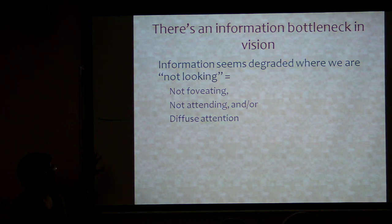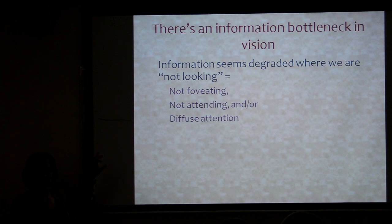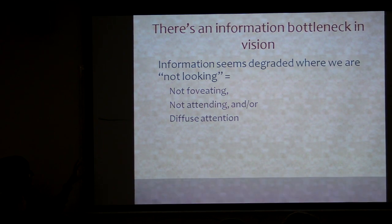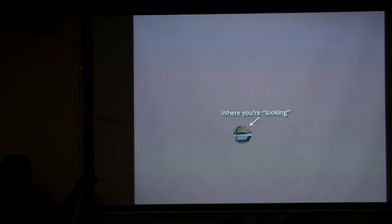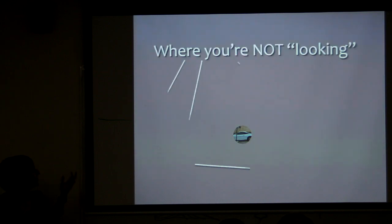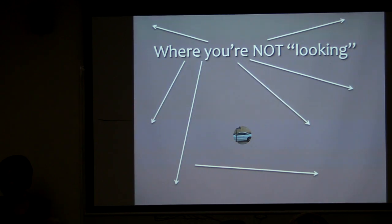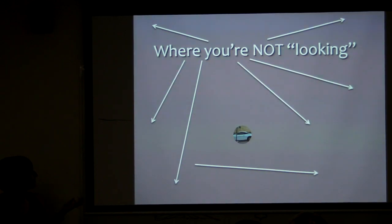This implies there should be big effects in vision that we need to know about. If where you're not looking things are coarsely encoded, and you go to look at a scene, this is where you're looking — maybe the size of your fovea depending on how far you are — and this is where you're not looking. That's all the stuff that's going to get this coarse encoding, and what's going on there is going to have a big implication for vision.